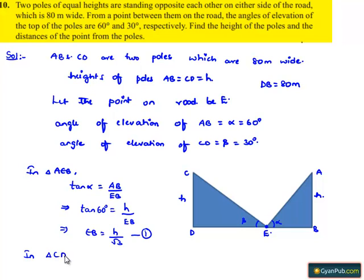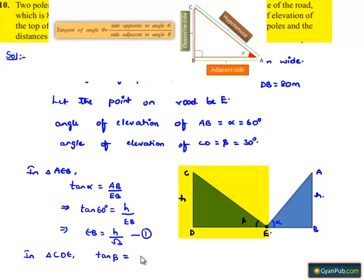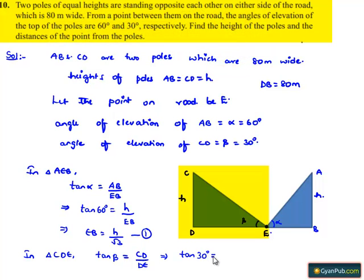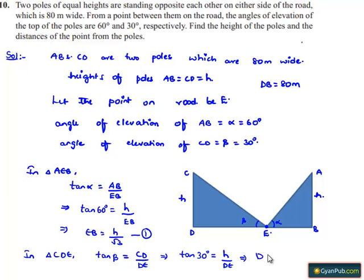Now let us consider triangle CDE. In triangle CDE, tan beta equals opposite side CD divided by adjacent side DE. That implies tan 30 degrees equals H divided by DE. Since tan 30 degrees is 1 by root 3, we get DE equals H root 3. Let this be equation number 2.